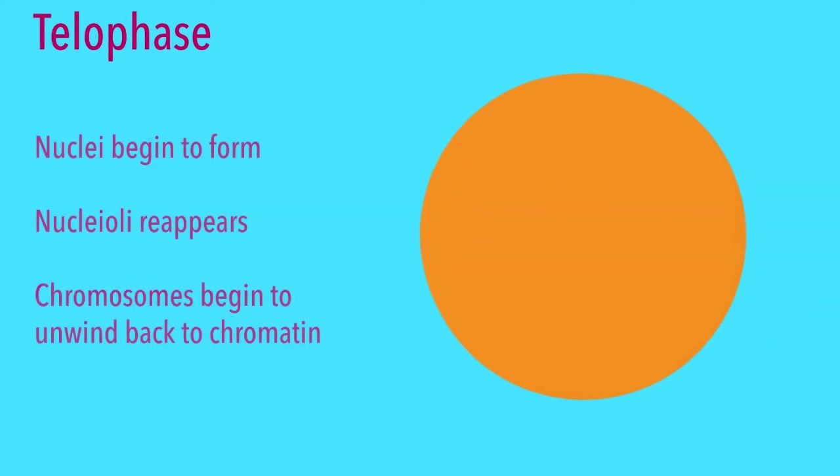In telophase, nuclei begin to form at both poles as well as nucleoli reappearing. Chromosomes also begin to uncoil back to chromatin as the cell membrane begins to pinch inwards. For plant cells, the cell plate forms, and for animal cells, a cleavage furrow appears, as shown in the video.